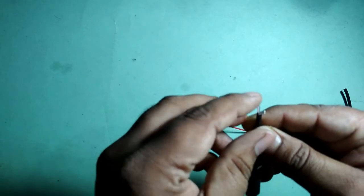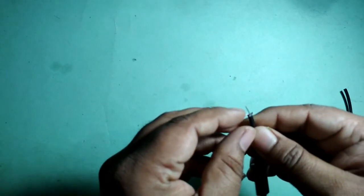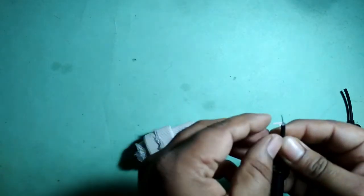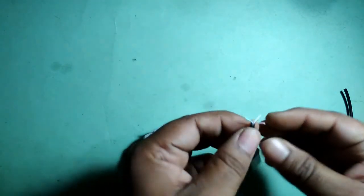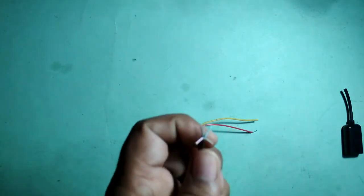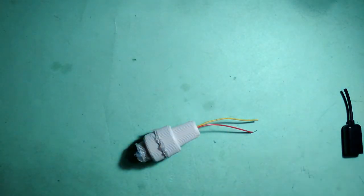You can see there are 4 wires. Two wires for positive and negative connection and two wires for data sharing. Now check which one is positive and which one is negative. I'm going to use a multimeter.